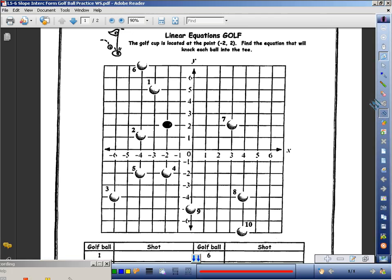It says, the instructions say the golf cup is located at point negative two comma two. Here's the cup right here. Find the equation that will knock each ball into the tee. Okay, if I start with ball number one, I have to hit the ball so that it knocks into the cup.